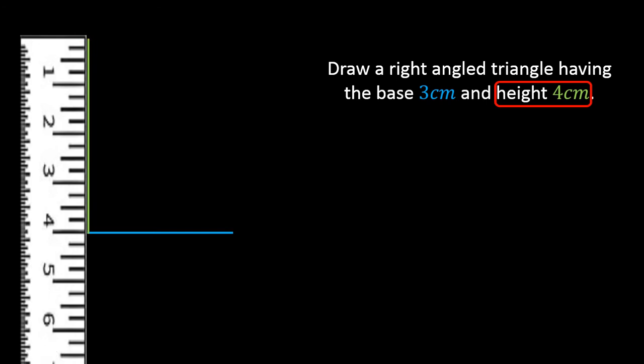Then you can easily draw the remaining line. When you have two endpoints, you can draw the line connecting them. Simply place the scale on both points and draw the third side of the triangle.